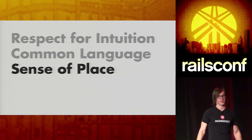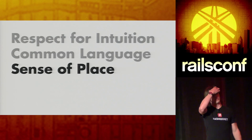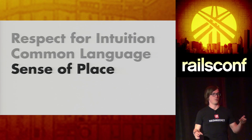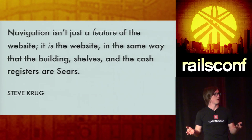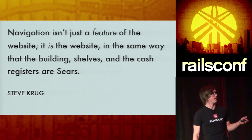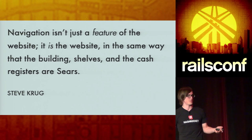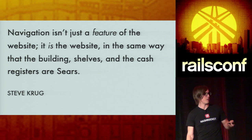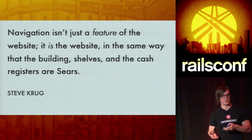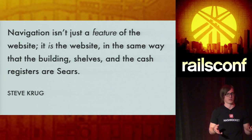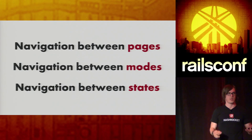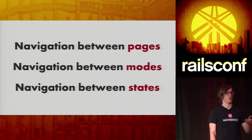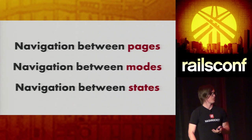Number three we're going to look at is a sense of place — what I mean here is the navigation of an item. Where is a user when they're using your thing? Steve Krug says, 'navigation isn't just a feature of the website, it is the website, in the same way that the building, shelves, and cash registers are a store.' Navigation is everything when it comes to helping your users understand where they are. With a lot of fat client apps, it's not just pages — it's modes of interface, it's states, what is active and available to me at any time.